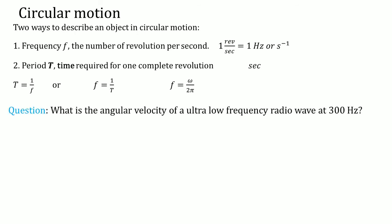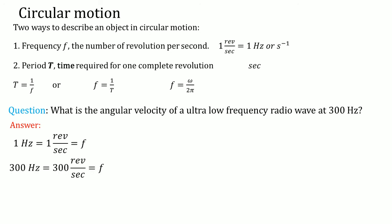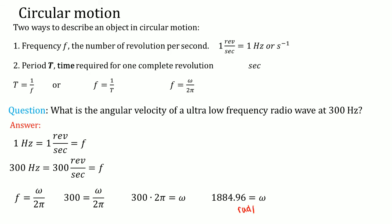A typical problem: what is the angular velocity of an ultra-low-frequency radio wave of 300 hertz? One hertz is one revolution per second, so 300 hertz is 300 revolutions per second. Using frequency equals angular velocity over 2π, solve for omega: plug in 300 for frequency and multiply by 2π to get approximately 1884.96 radians per second. That is the angular velocity of something traveling at 300 hertz.